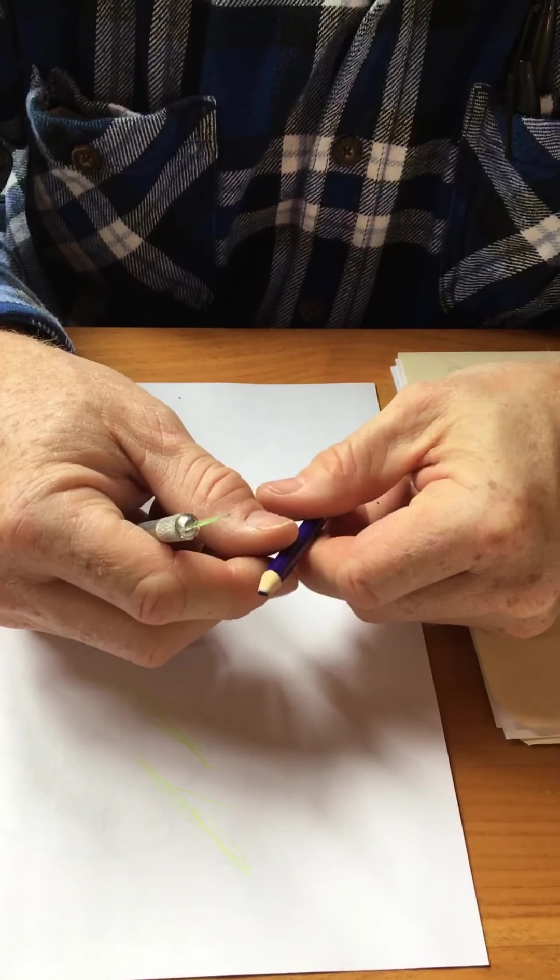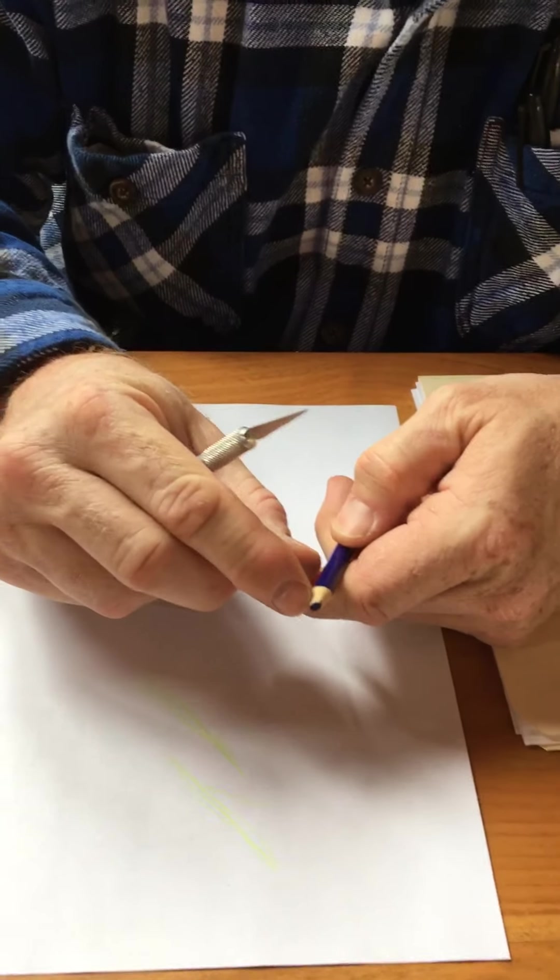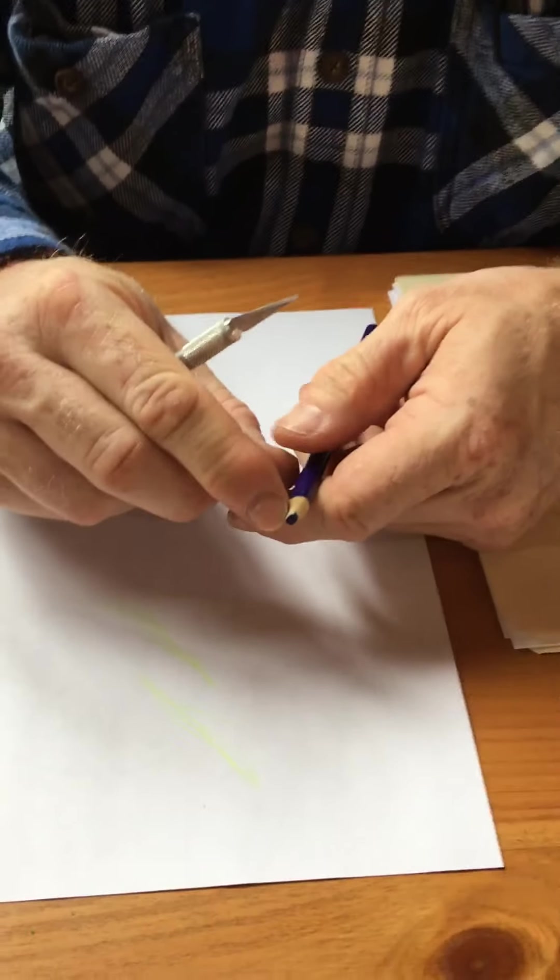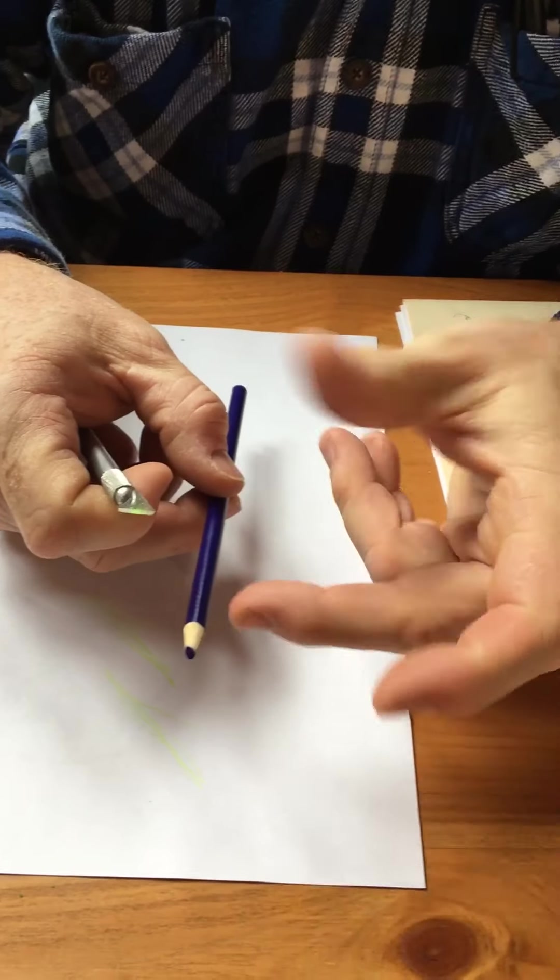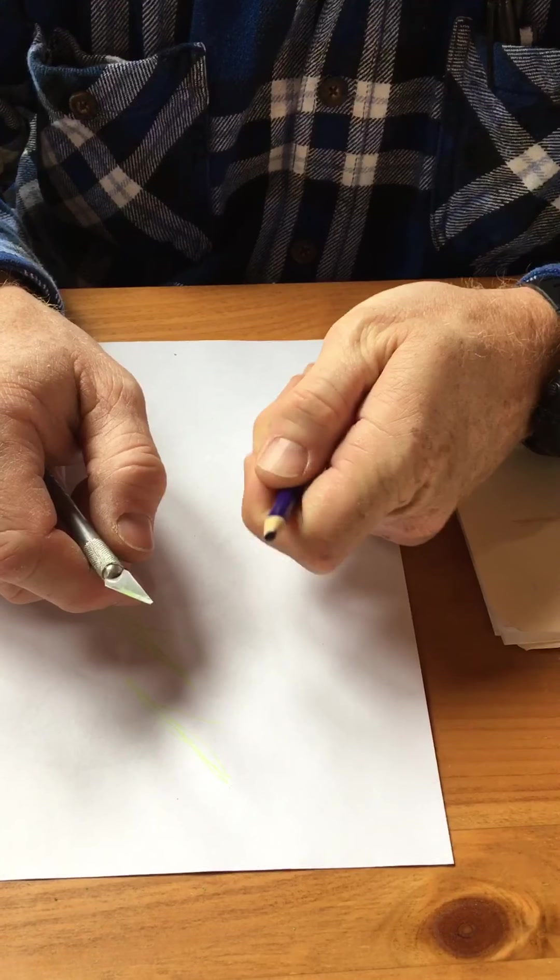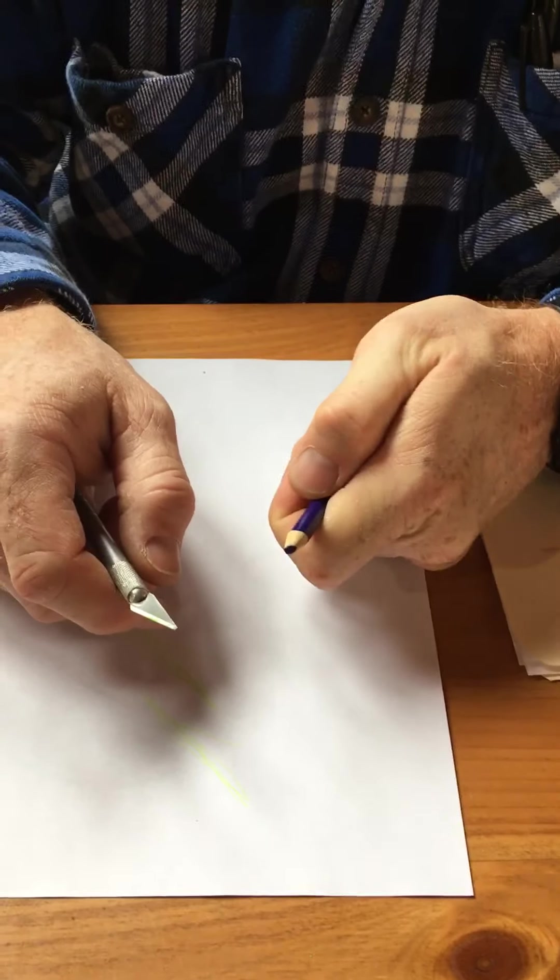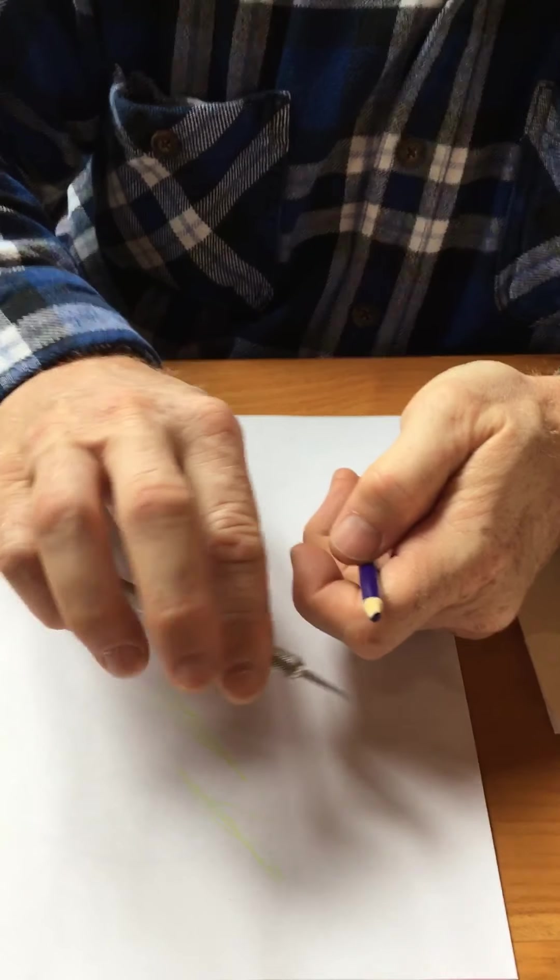So you can see, obviously we have a pretty dull pencil and we want to get that lead where we can use the lead and not have the wood right up to the edge of it. So the way we're going to do this is I'm going to use this hand to rotate the pencil and also my thumb on this hand to push the blade forward and backwards.